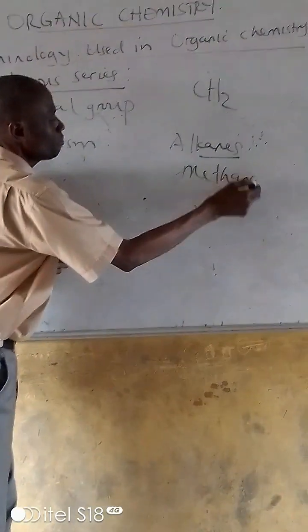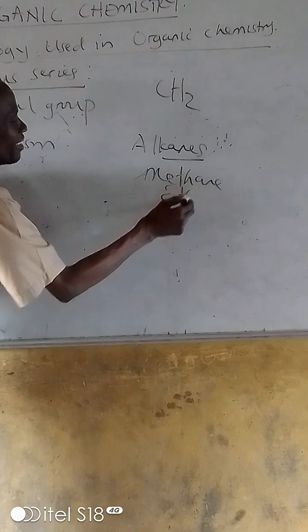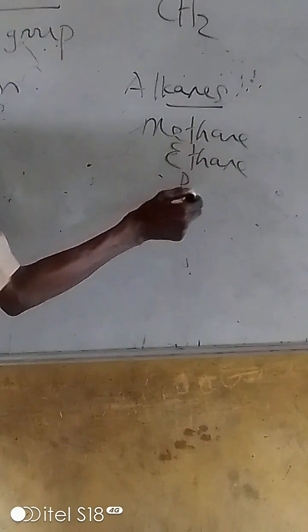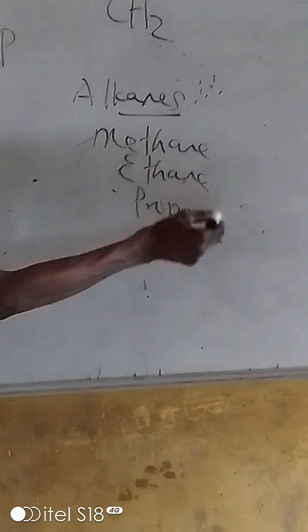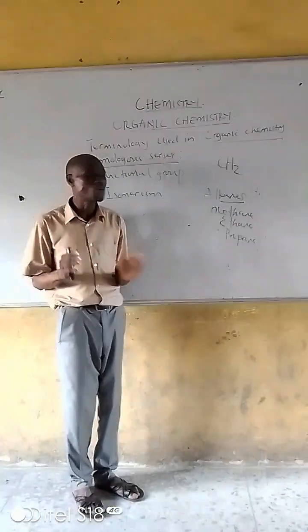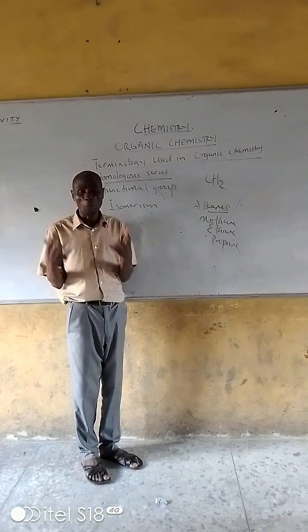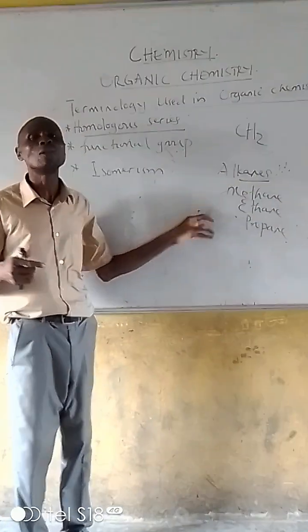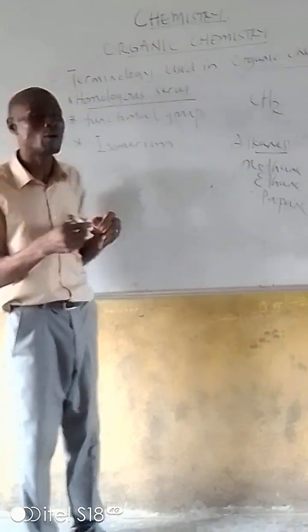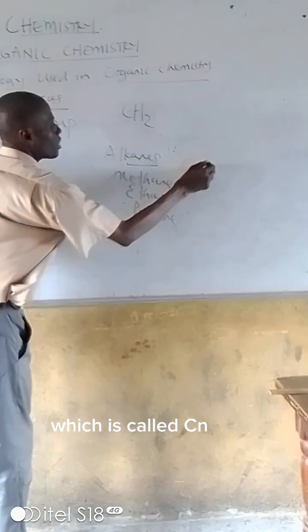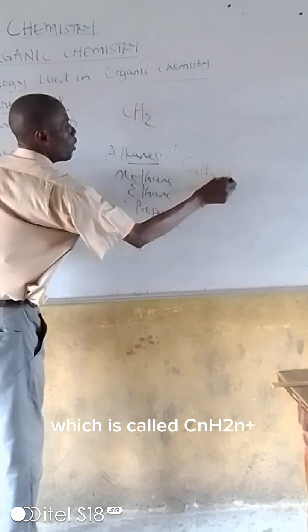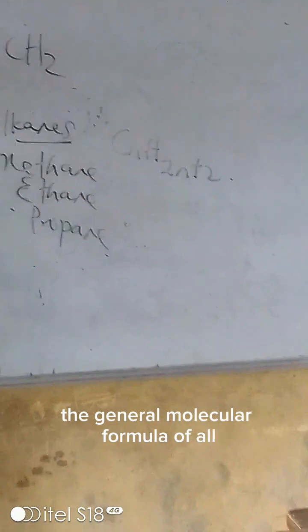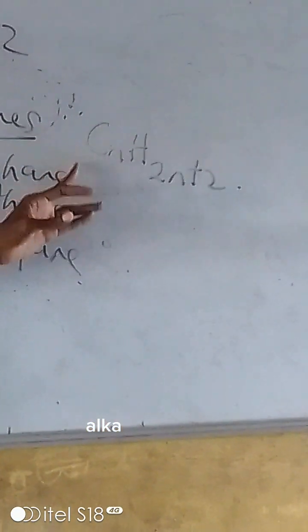So this is methane. You also have ethane, you also have propane. They are all in the same homologous series. We also have the same general molecular formula, which is CnH2n+2. That's the general molecular formula of all alkanes.